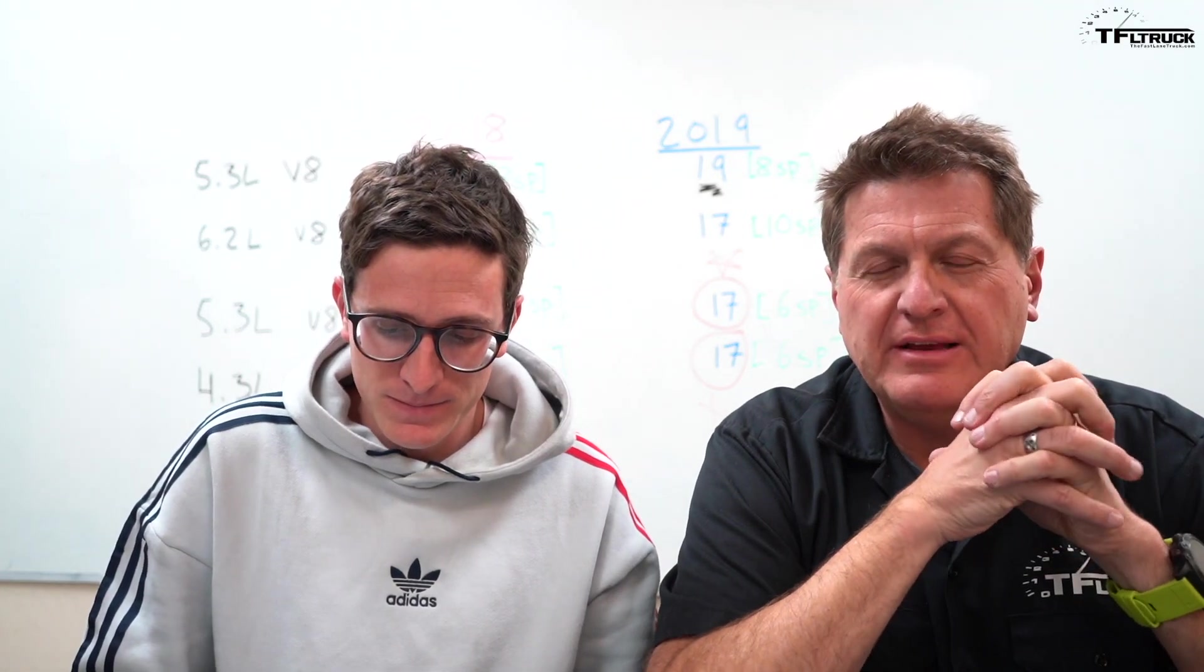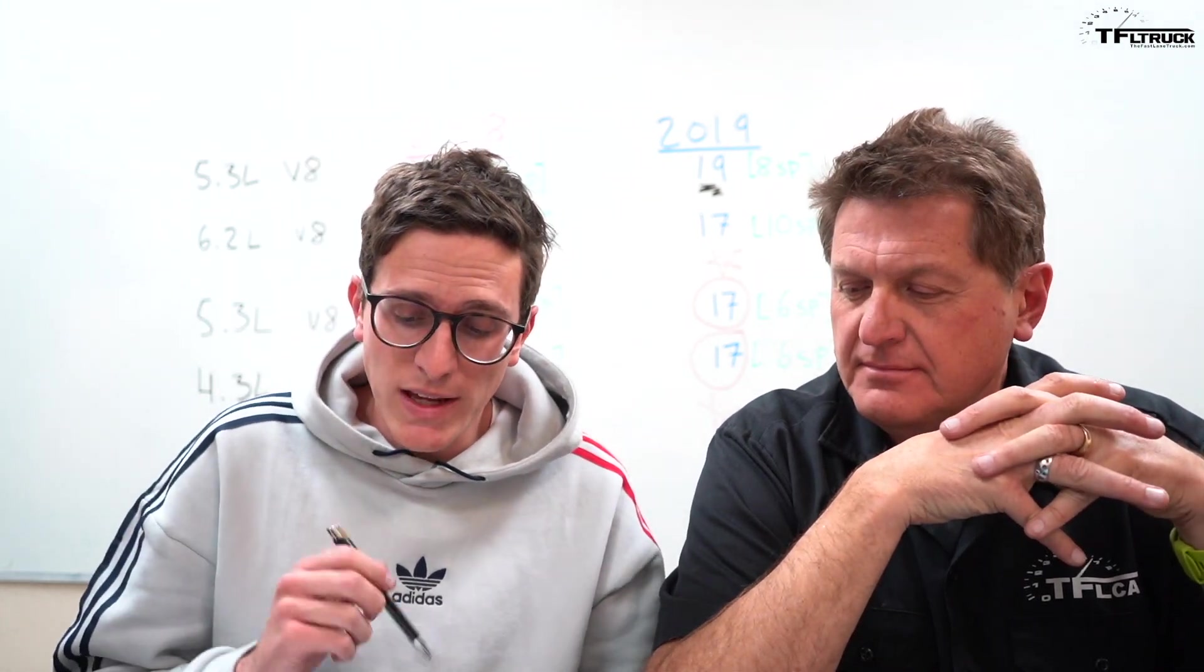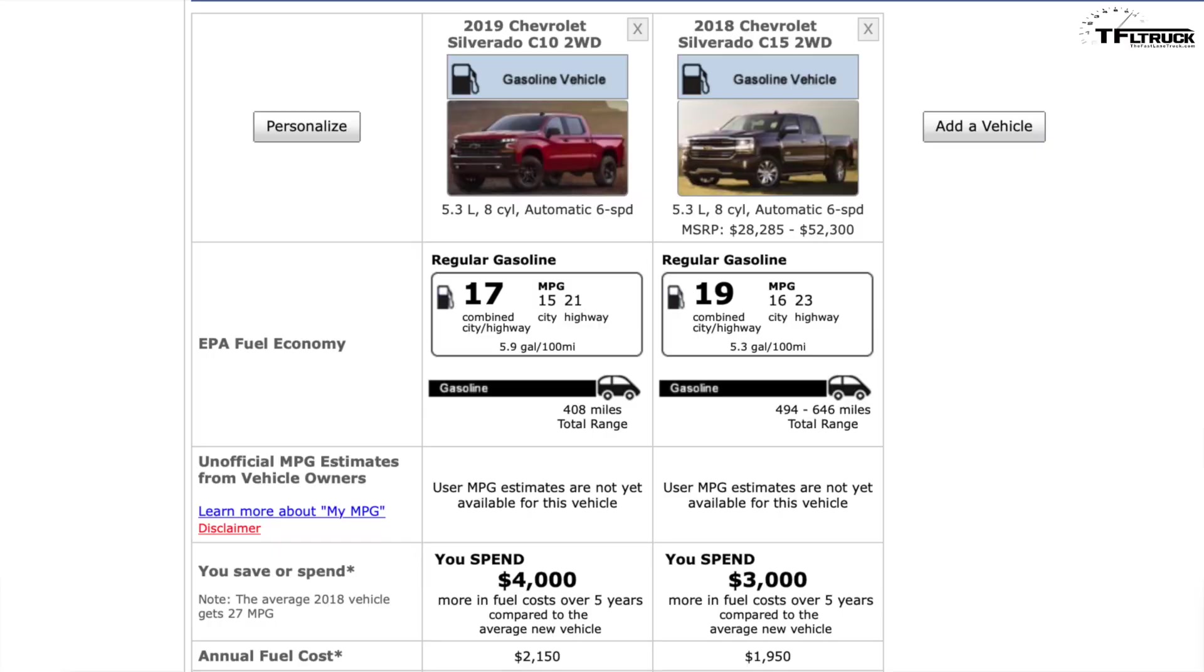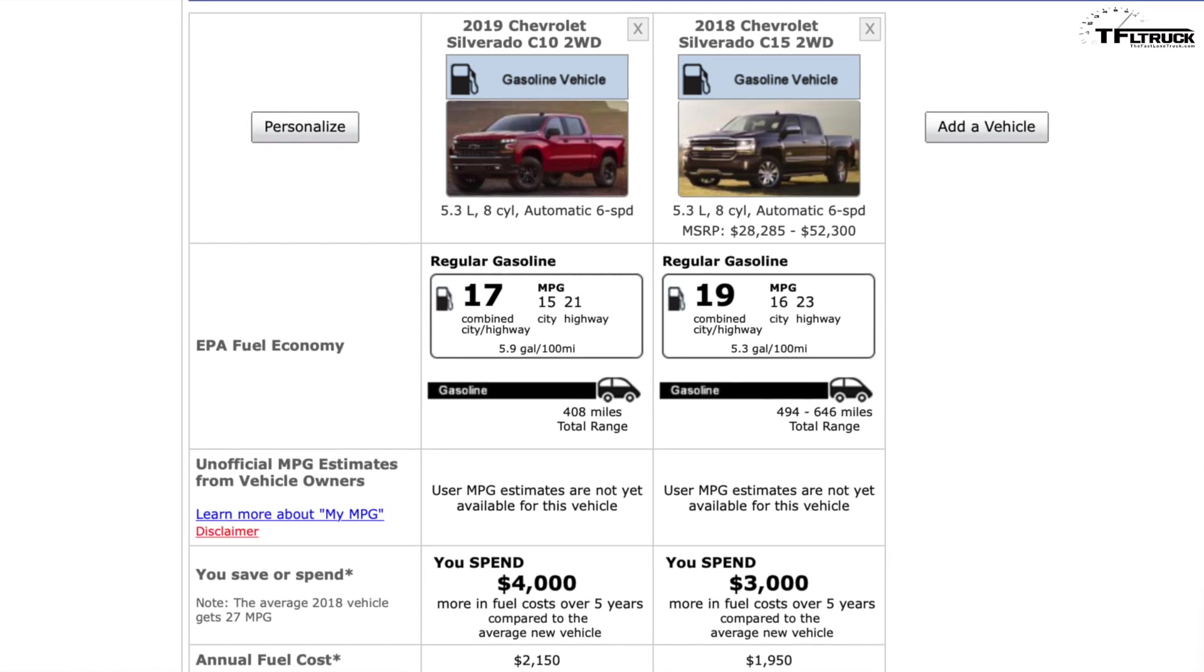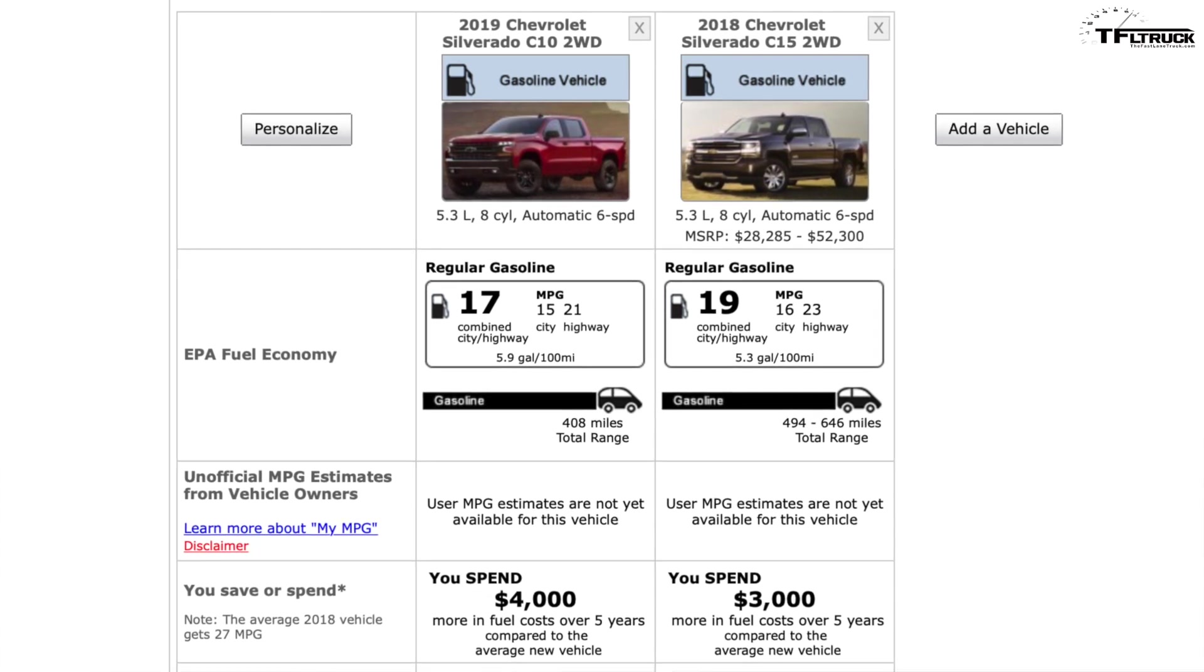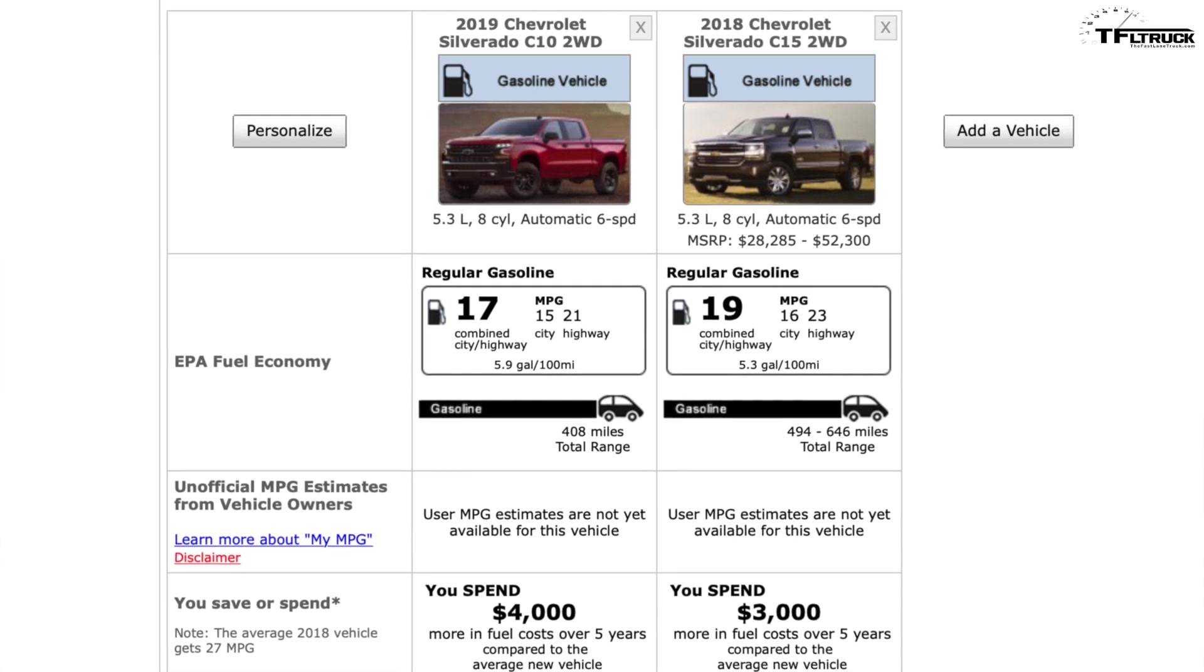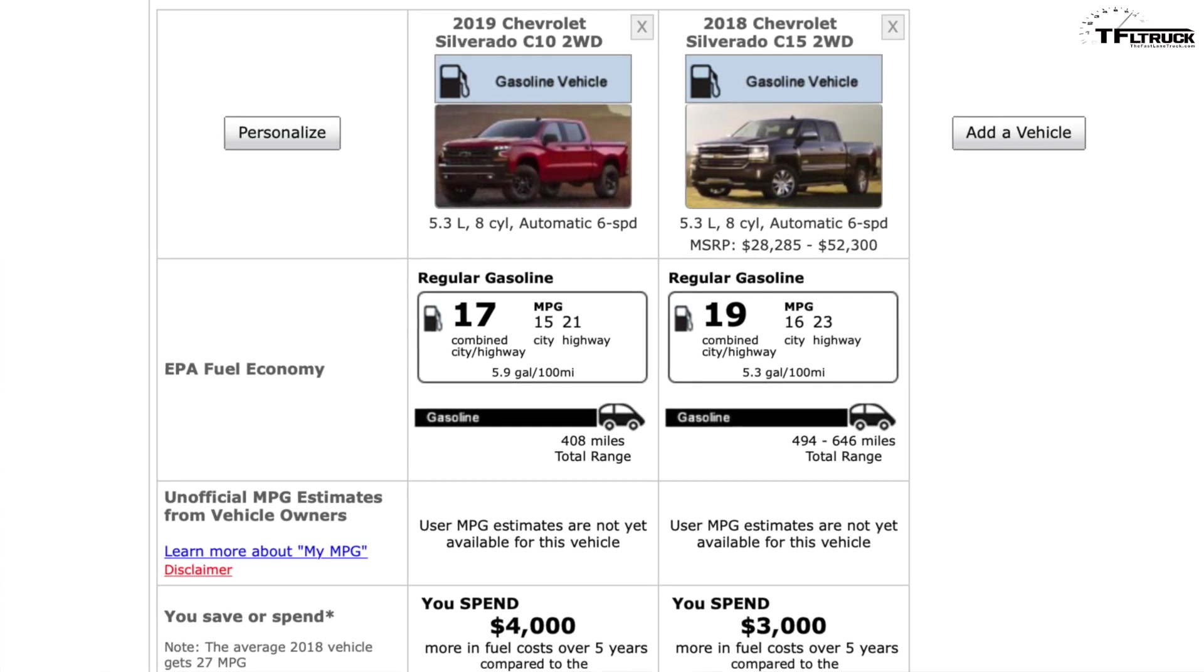Combined like configurations, the 2018 got 19 combined. The 2019 gets 17 combined. Once again, pretty much the same engine, pretty much the same transmission, and you have a 2 MPG discrepancy in the wrong direction. This is really confusing—why would a truck that weighs less, basically has the same engine, get 2 MPG less? I don't understand.